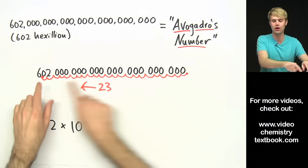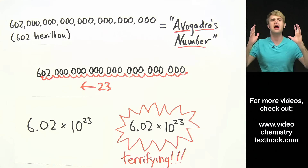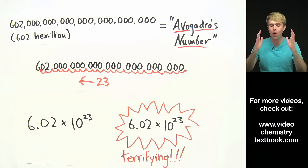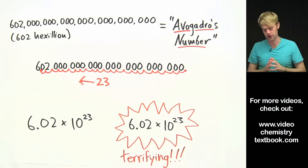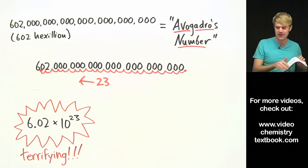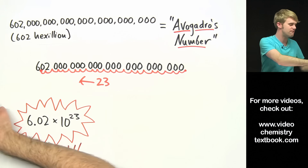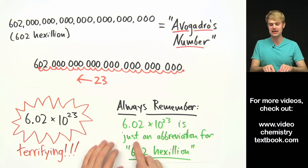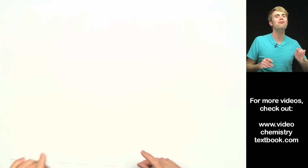Now 6.02 times 10 to the 23rd is a convenient way to write this gigantic number, but it can also look terrifying — it's got this 10 with an exponent, 6.02 times this thing. People see this and think, 'Oh my god, what do I even do with this?' Relax. Just remember that 6.02 times 10 to the 23rd is simply an abbreviation for 602 hexillion. Every time you see it, remember it's just that very large number.